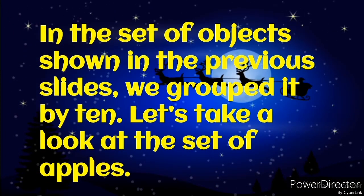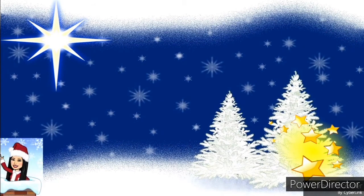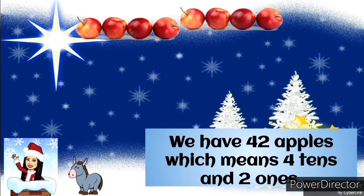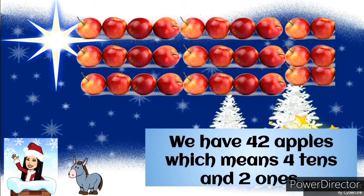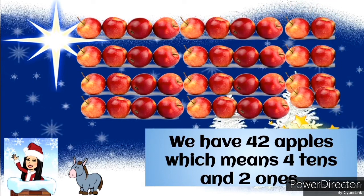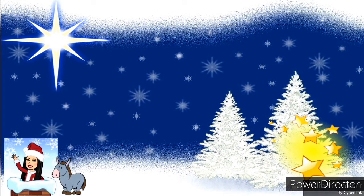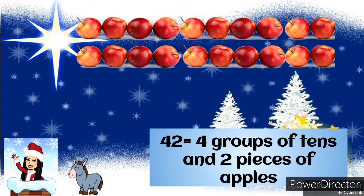In the set of objects shown in the previous slides, we grouped it by 10. Let's take a look at the set of apples again. We have 42 apples, which means 4 tens and 2 ones. 42 is equal to 4 groups of tens and 2 pieces of apples.